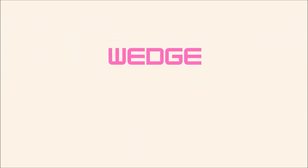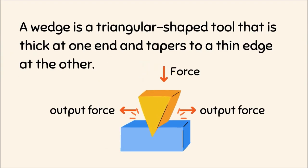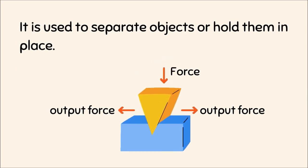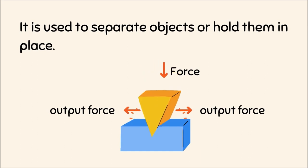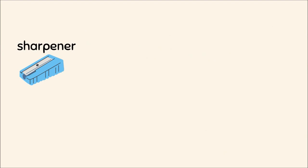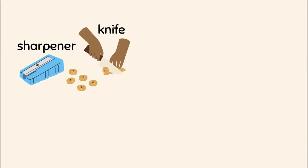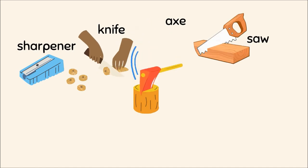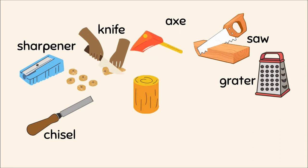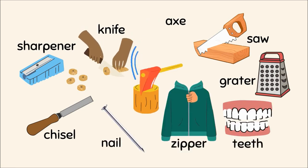A wedge is a triangular-shaped tool that is thick at one end and tapers to a thin edge at the other. It is used to separate objects or hold them in place. Examples of wedges: sharpener, knife, axe, saw, grater, chisel, nail, zipper, and teeth.